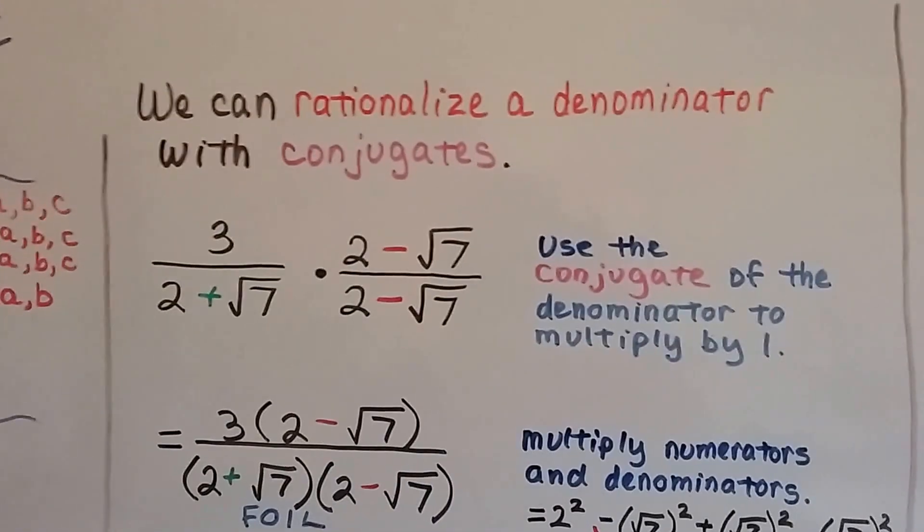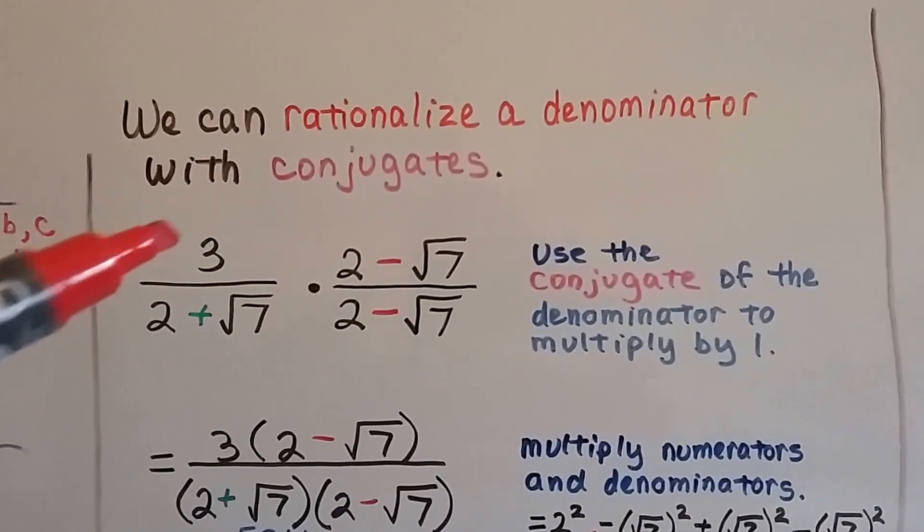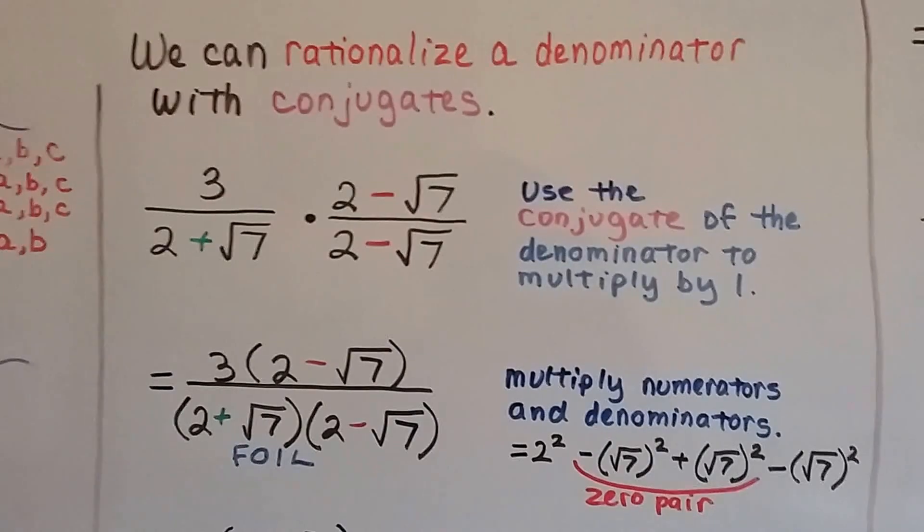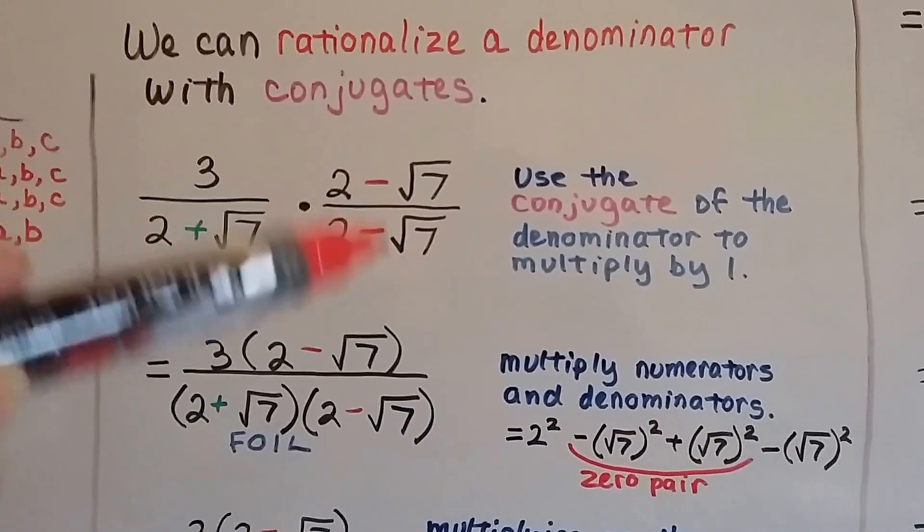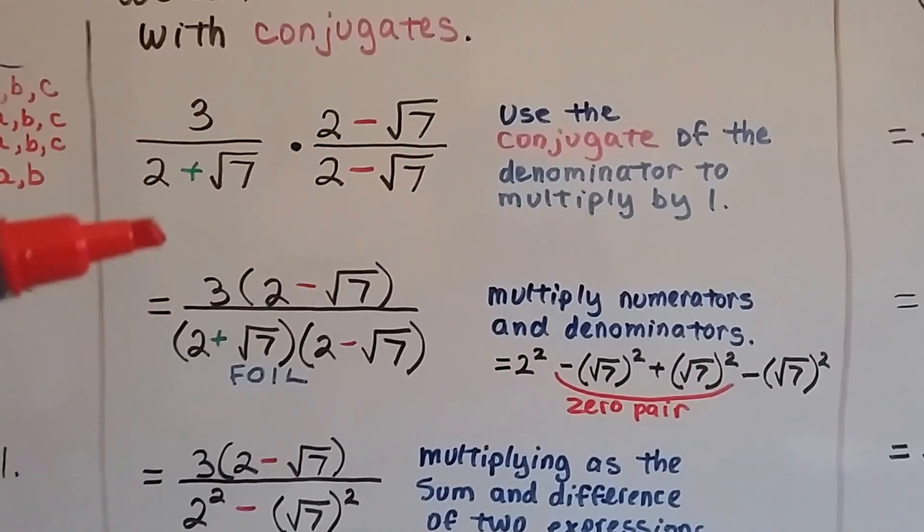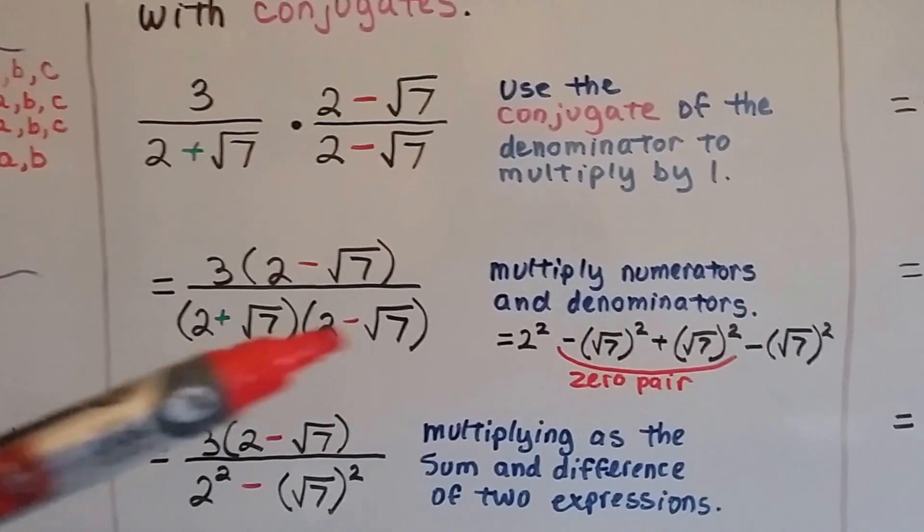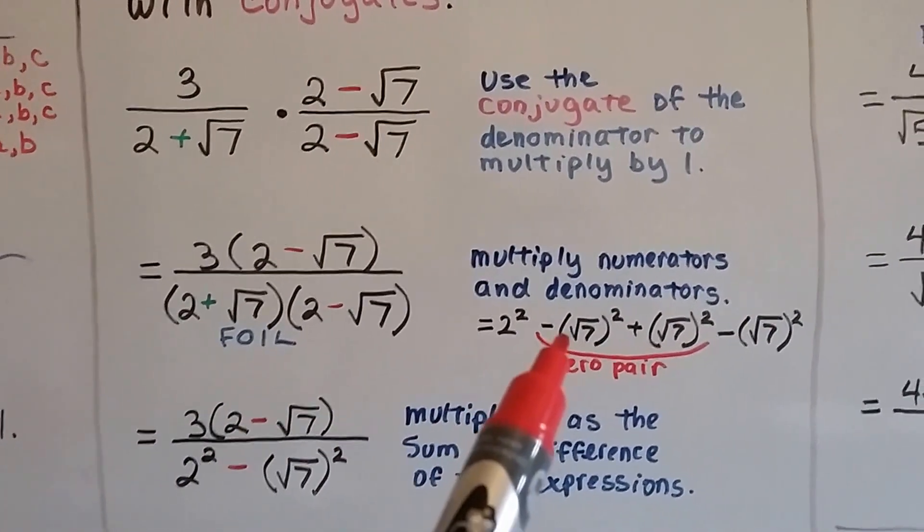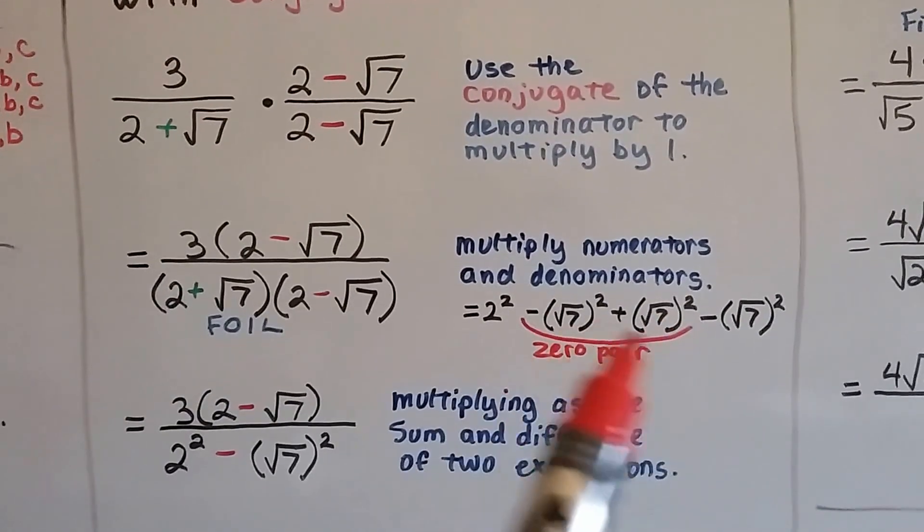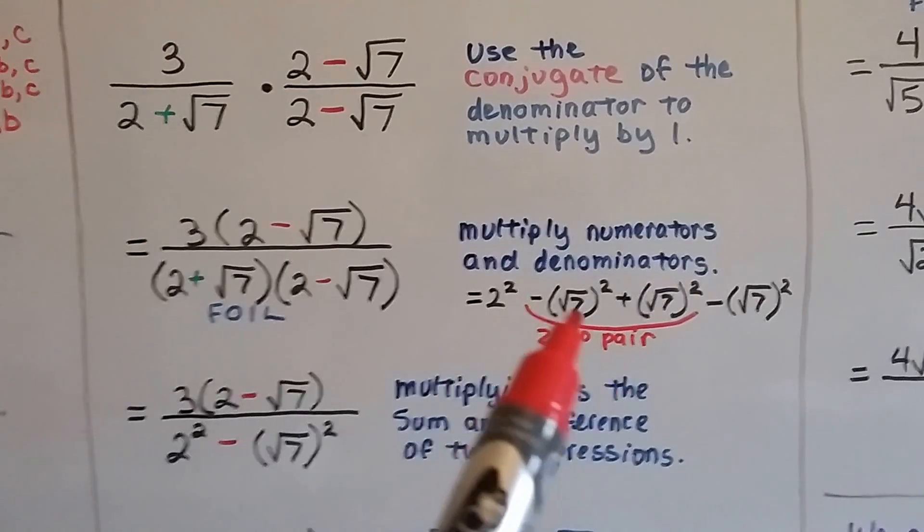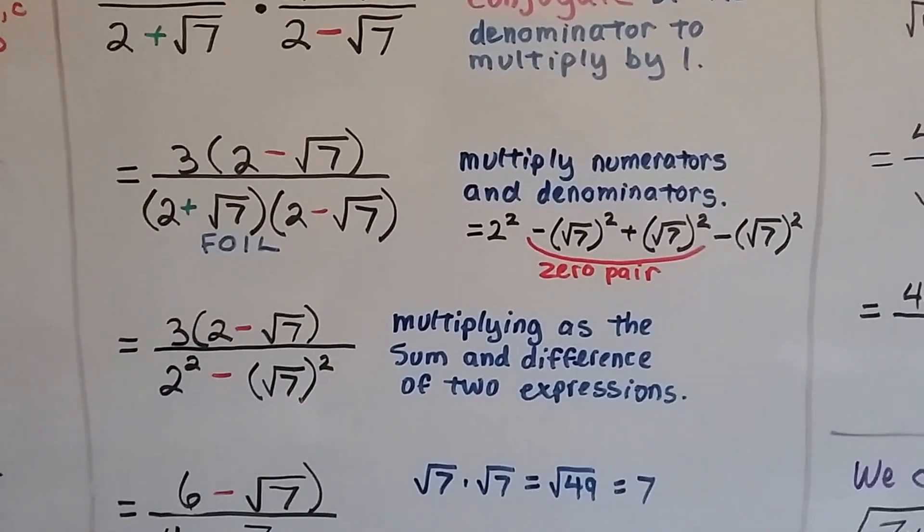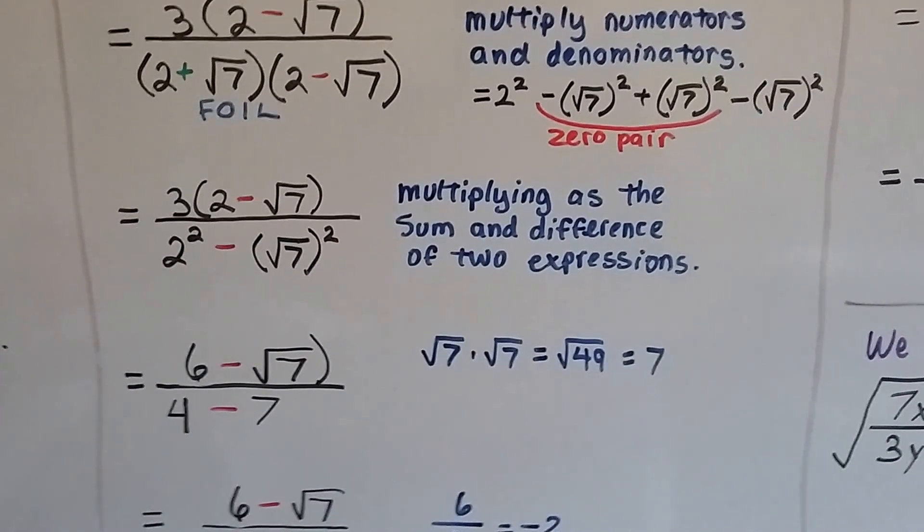We can rationalize the denominator with conjugates. So for this quotient of 3 and 2 plus the square root of 7, we'll use the conjugate of the denominator to multiply by a 1. We can multiply straight across and we get 3 times 2 minus the square root of 7. And down here, we can put these in parentheses and FOIL them. It's going to give us 2 squared minus the square root of 7 squared plus the square root of 7 squared minus the square root of 7 squared. And this is going to create a zero pair. It's additive inverse. We're taking away one and adding one, so it makes a zero.